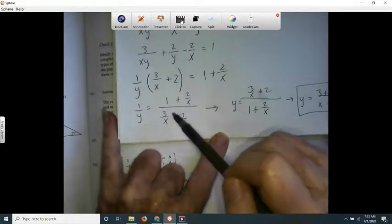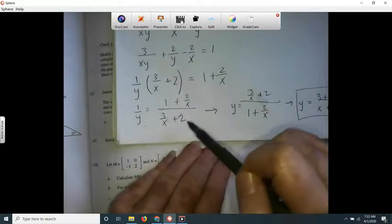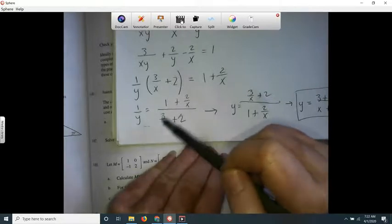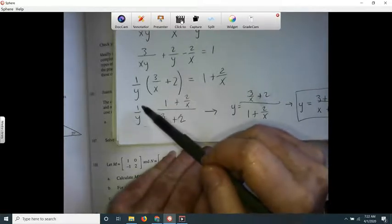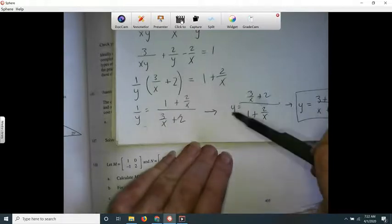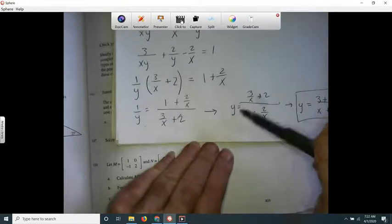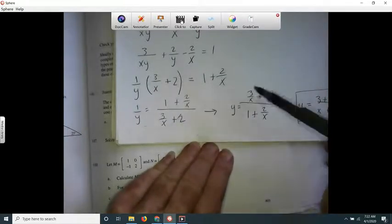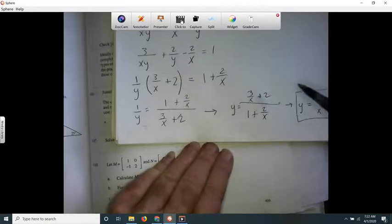See, I got 1 over y equals 3 over x plus 2. And then I did that reciprocal thing. I can just flip these both upside down, so now I've got y. See how this one's up here, down here.